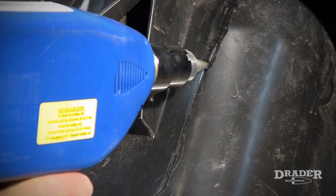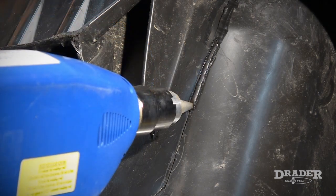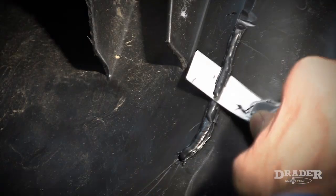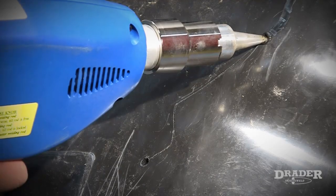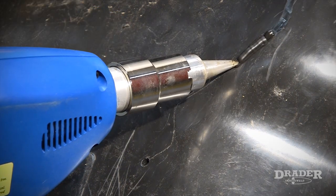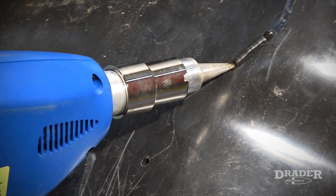The heated tip of the Drader injector weld melts into the plastic before it injects molten plastic into the weld zone. The combination of hot tip and proper injection pressure really sets the injector weld apart from other plastic welding systems.